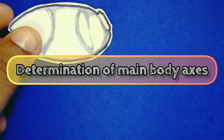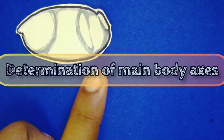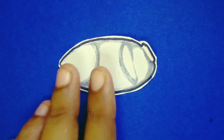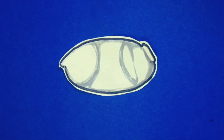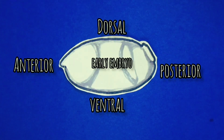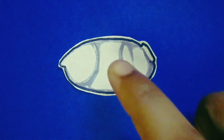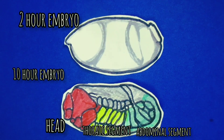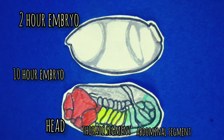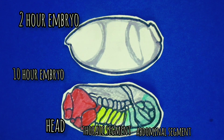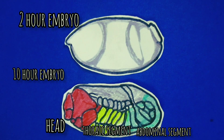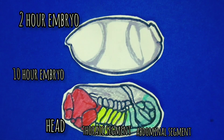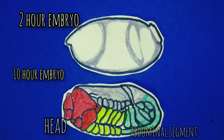Now let's understand how the dorsal-ventral axis is determined. The dorsal-ventral axis defines the back and belly of the fly. At least 12 different genes determine this axis, one of the most important being the gene called dorsal. The dorsal gene is transcribed and translated in the maternal ovary, and the resulting mRNA and protein are transferred to the egg during oogenesis.